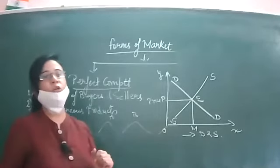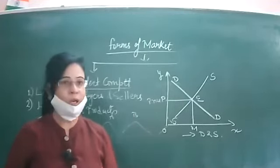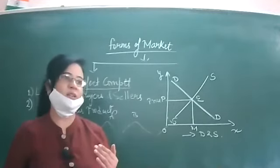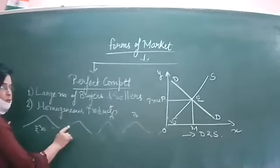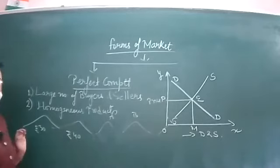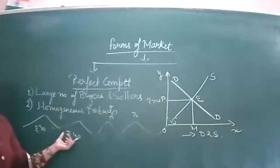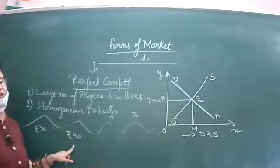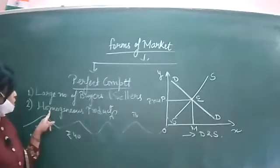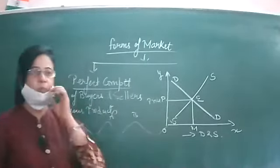Now because they are selling homogeneous products, they have to sell the product at the same price — they are adopting a uniform price policy. If one farmer sells wheat at 30 rupees per kg and another charges 40 rupees per kg, no consumer would ever go to the second farmer, so his wheat would remain unsold. A consumer is never ready to pay a higher price for an identical product. So because they are dealing in homogeneous products, all of them adopt a uniform price policy.